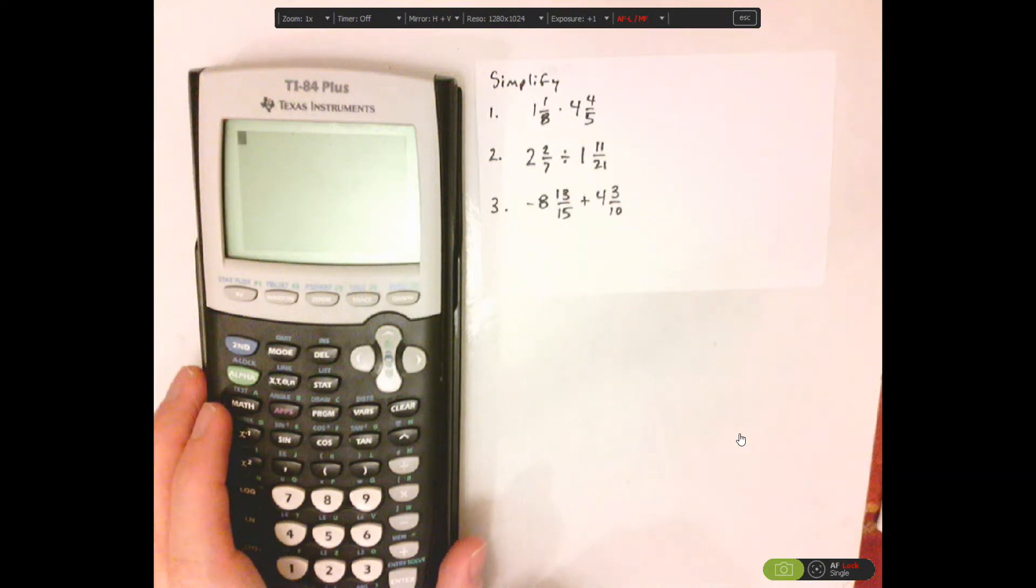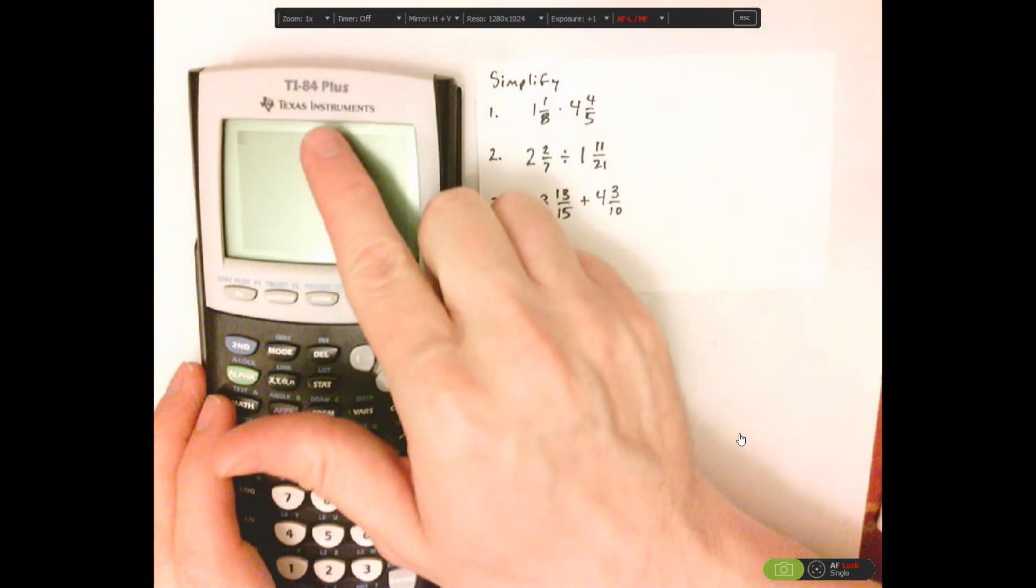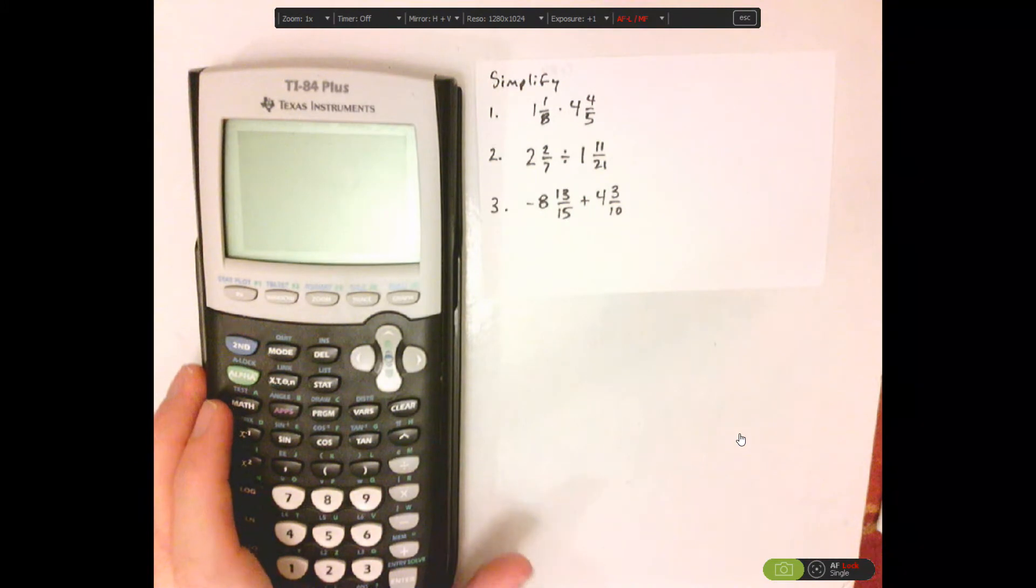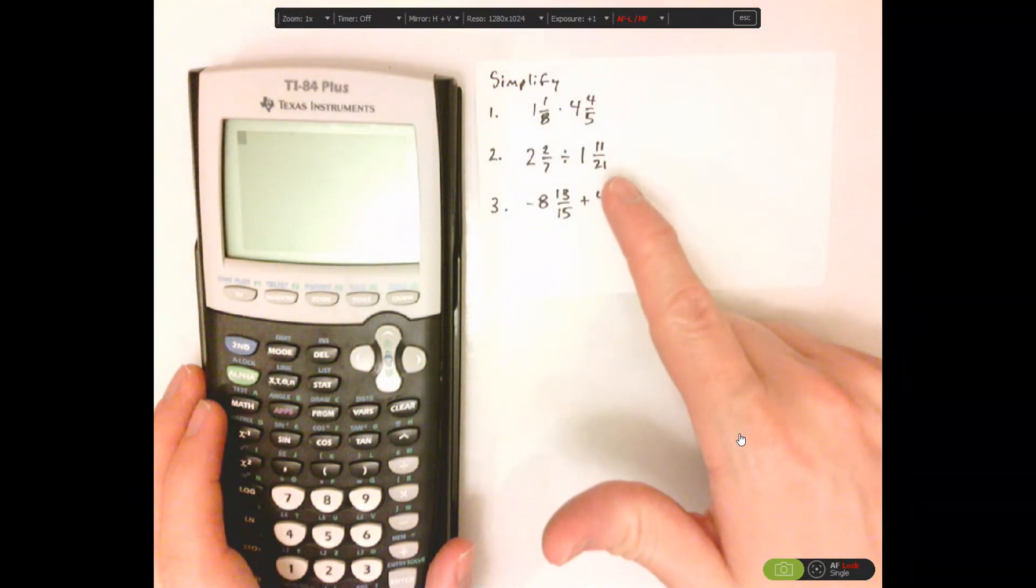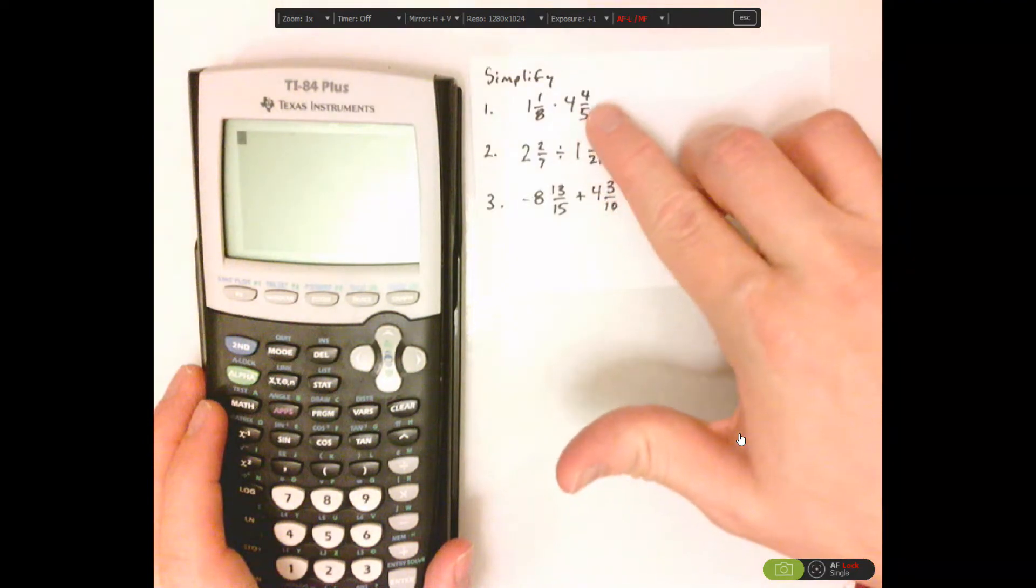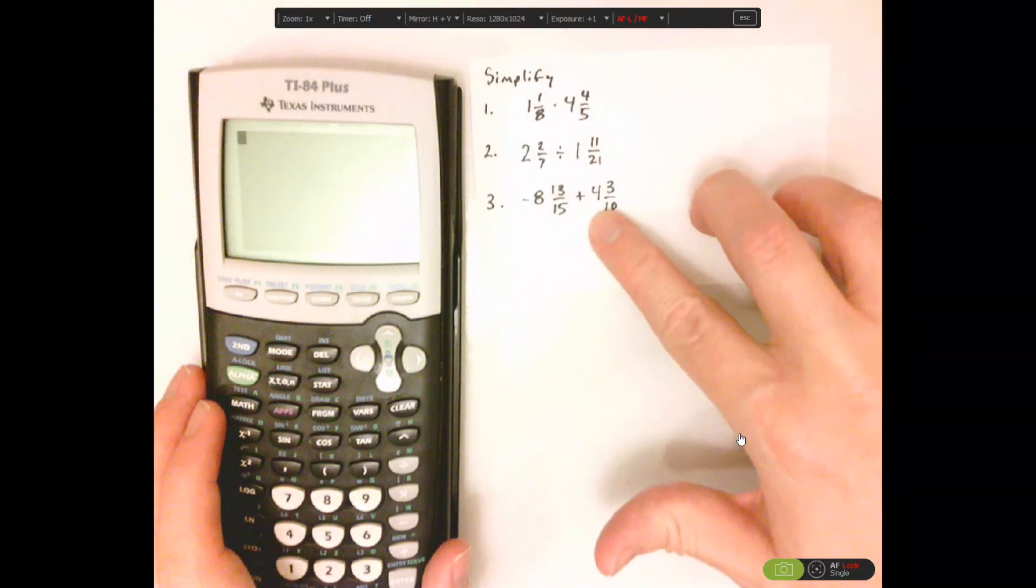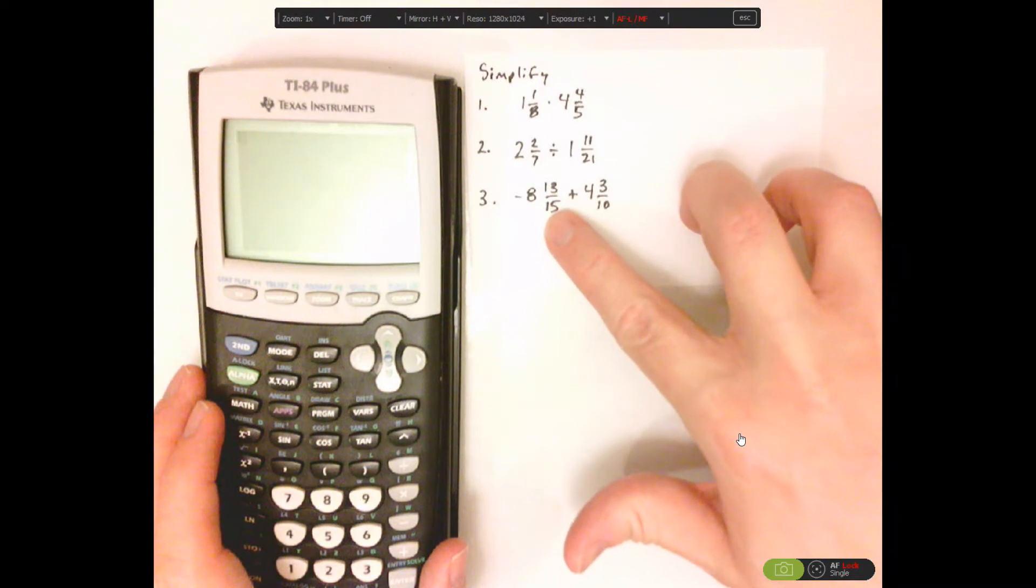Hi, I'm JD, and today we're going to be using the TI-84 Plus Calculator. We're going to be going over operations with mixed numbers. I'm going to show you multiplication, division, and then also addition with a negative.